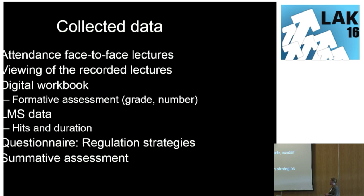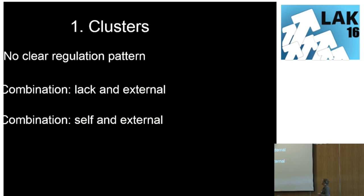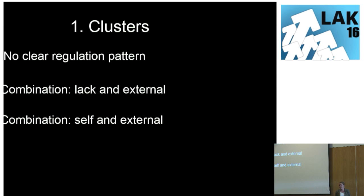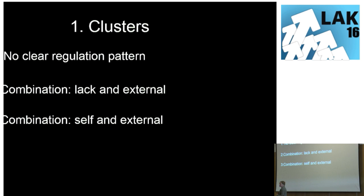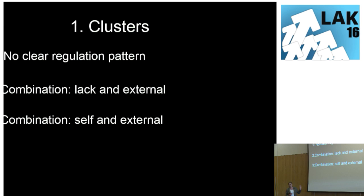Then I started clustering based on the regulation strategies. The first cluster has no clear pattern — that's probably Jim, who's just winging it. Then we have the second cluster who mainly shows an external regulation strategy, so this person is very reliant on the teacher or the online learning resources. When that fails, it will probably show a lack of regulation. And then we have the third cluster — basically what we want to teach the students — mainly they're self-regulated, but when they fail to do so, they use an external regulation strategy to compensate. So we had three distinct clusters.